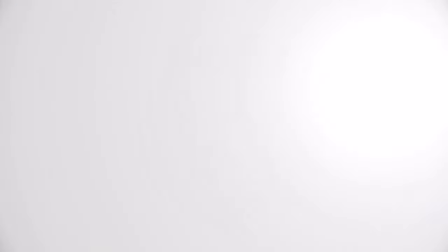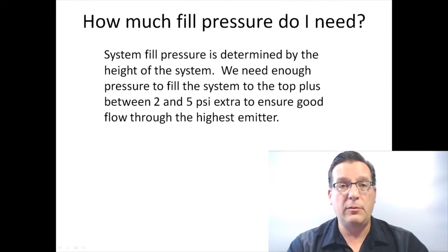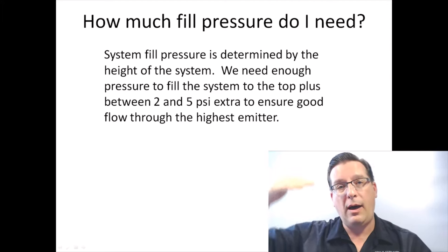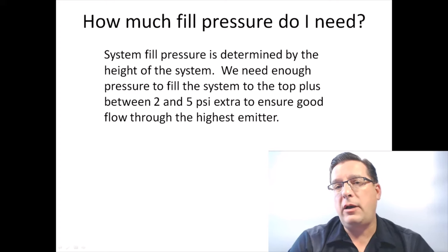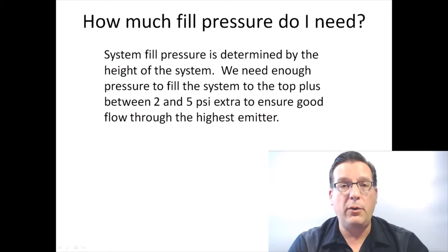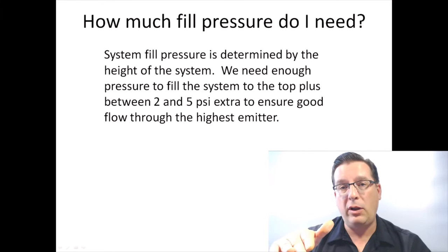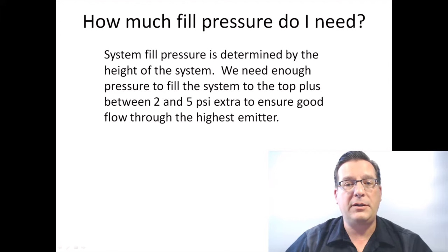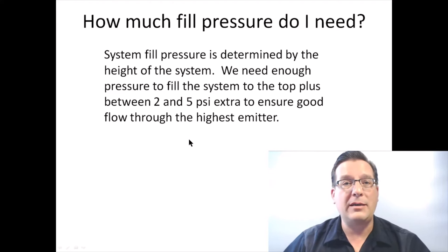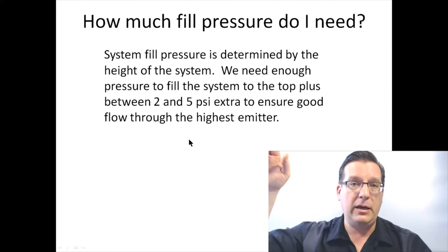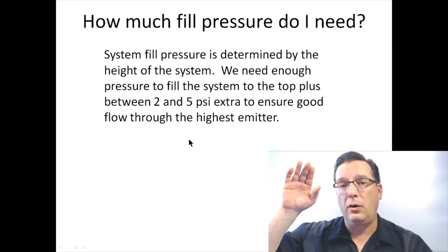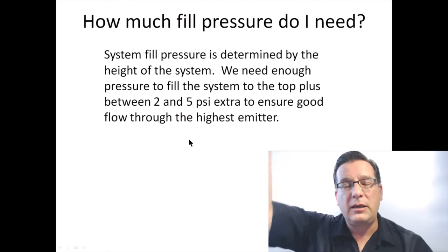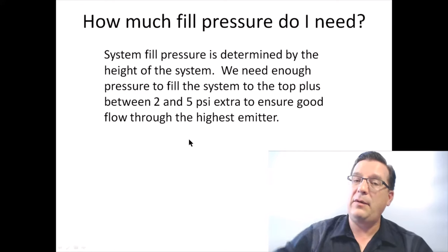The more difficult part is: how do I decide where to set the pressure reducing valve? On all hot water boiler systems, system fill pressure is determined by the height of the system — how tall is it, how high up in the air does that water go? Assuming the boiler is the lowest point of the system, in the basement, with all piping going up from there, we're going to need enough pressure to fill the system to the top plus an extra two to five PSI to ensure good flow through the highest emitter — the radiator, baseboard fin tube, fan coil, or whatever is at the highest point.